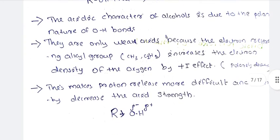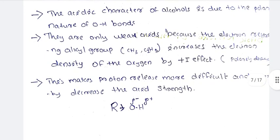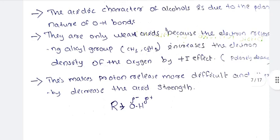Alcohols are weak acids because the electron-releasing alkyl groups increase the electron density of oxygen by the +I effect. Alcohols can be primary, secondary, or tertiary. The electron-releasing character of alkyl groups affects the proton release — what does it mean by the electron-releasing character in terms of proton release?